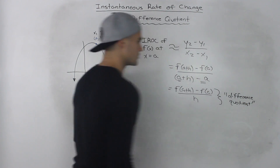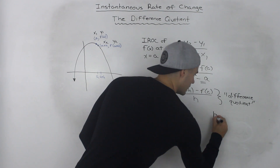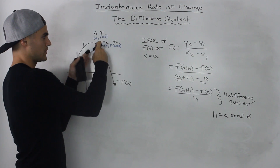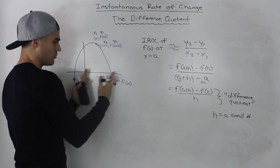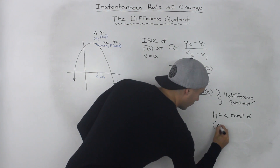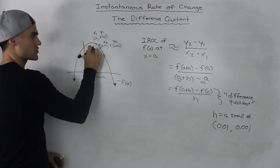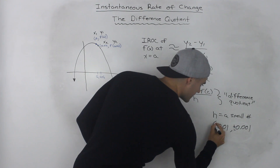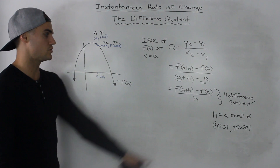We can use this to approximate the instantaneous rate of change at x equals a, but remember, h has to be a small number — always. Because if h gets too large, we get a worse and worse approximation. The closer we get the a plus h point to the a point, the better the approximation of the slope of the tangent. So h should be a small number like 0.01 or 0.001. It doesn't necessarily have to be positive — we can go in the other direction and use a preceding interval, so h can be plus or minus.